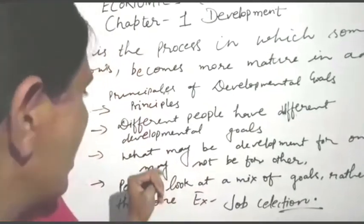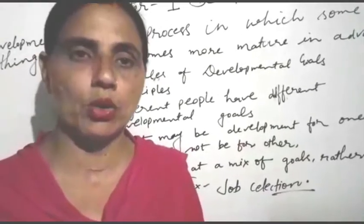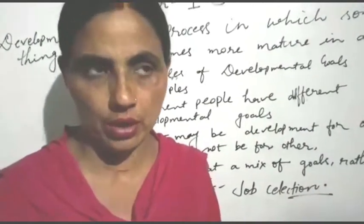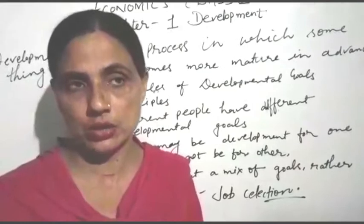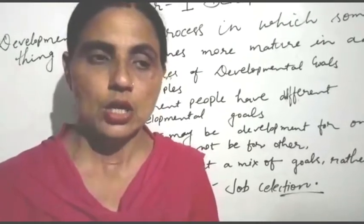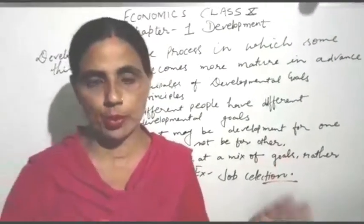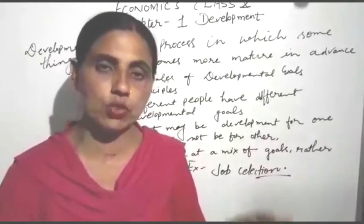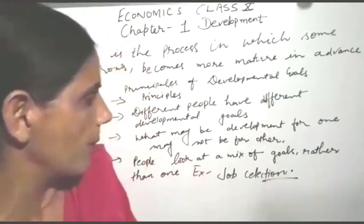The second point is: what may be development for one may not be for others. For example, consider dam building. The dam may bring profit for the state or for people in areas where the water goes. But the people living on that same place have to leave — so that is not development for those persons.